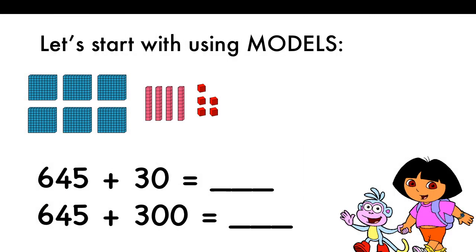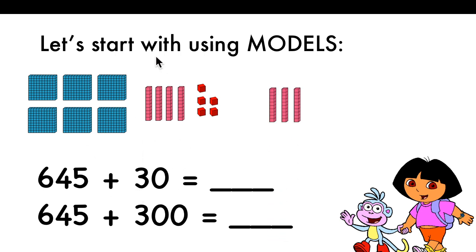We can add tens and hundreds using models. When you're adding tens, you can draw or add more tens, like in this case. You have 645 and you're adding 30, that means 3 tens. The number of tens will change — it will not be 4, but you will add 3 more tens. 4 plus 3 equals 7, so you will have the number 675.